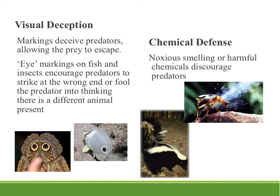Another type of prey defense is visual deception — markings on the animal itself that deceive the predators and give the prey a moment to escape. Some eye markings on fish or caterpillars suggest that the head of the animal is actually where the tail is. We have a fish here with a very large eye marking. And there are also eye markings that make the predator think they're looking at a different animal altogether — this moth looks very much like an owl when you see those eye markings on the lower part of the wings.